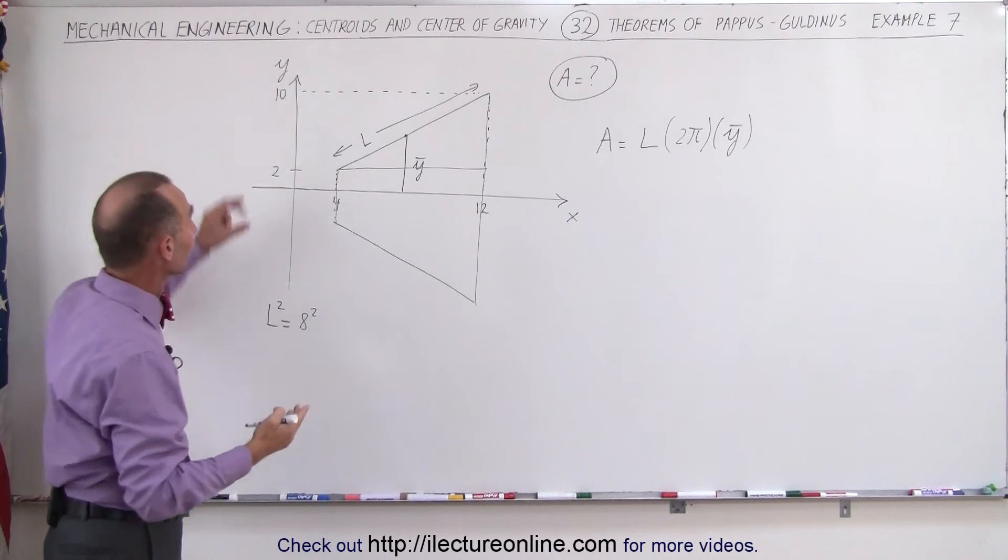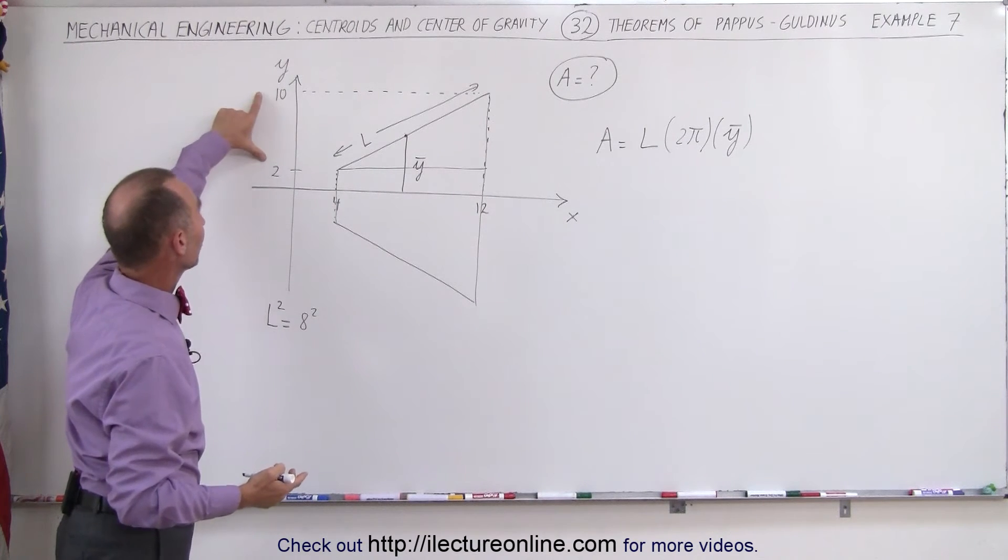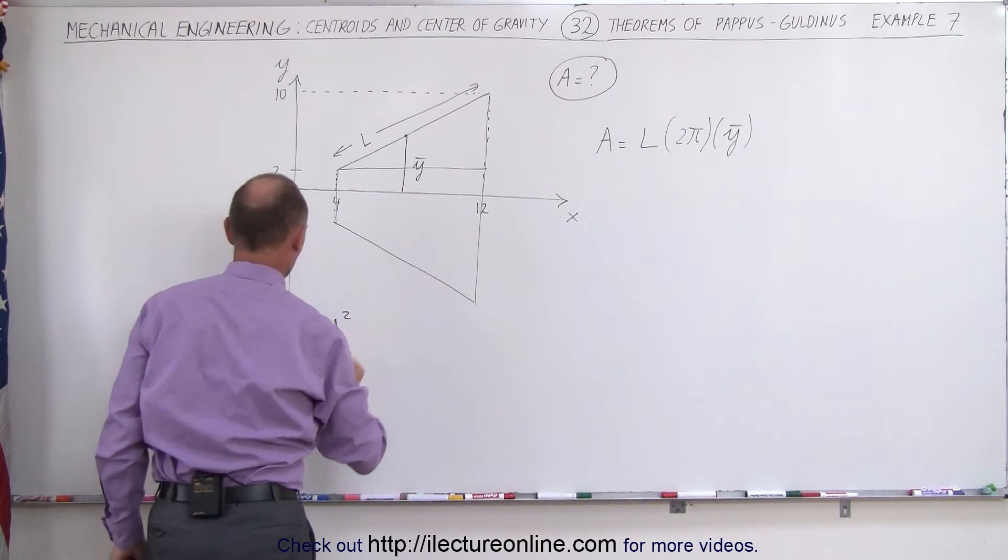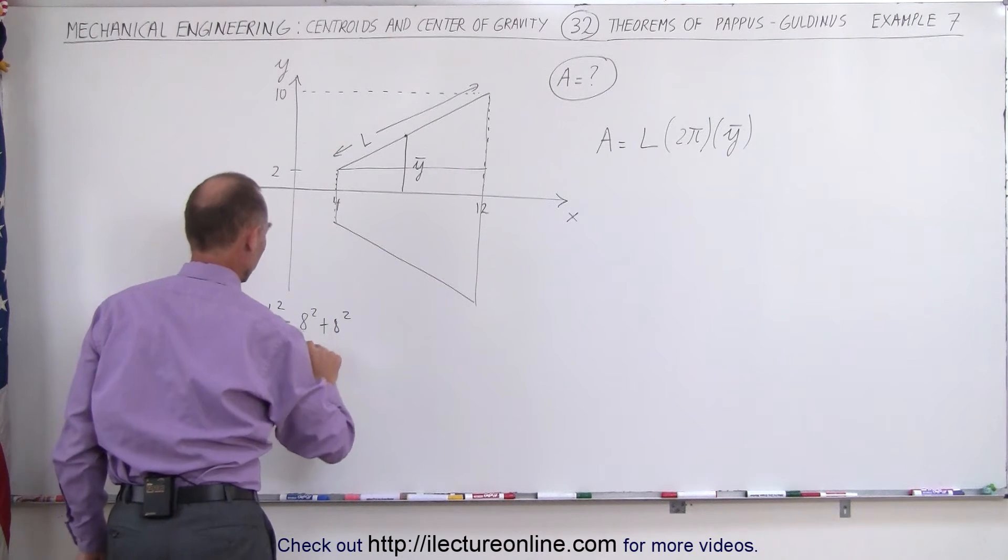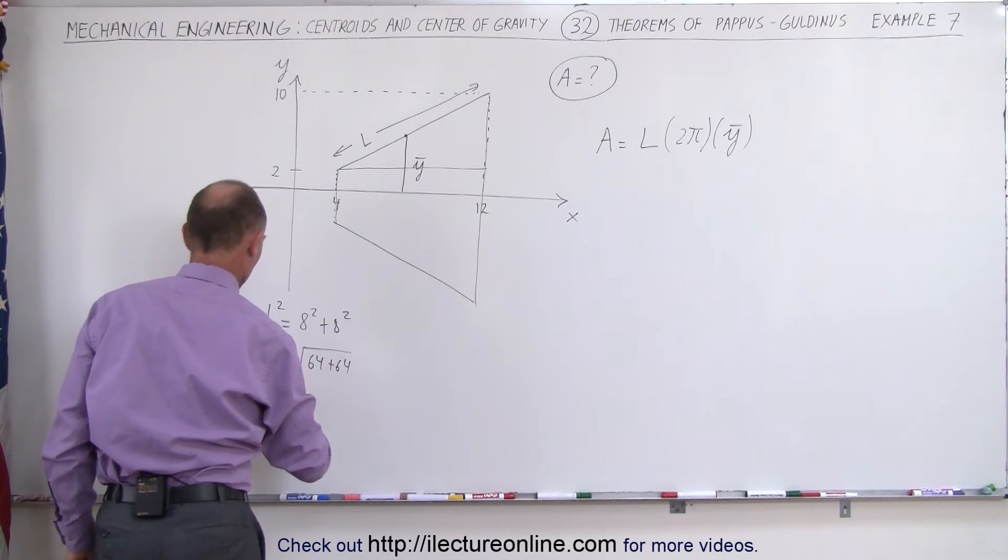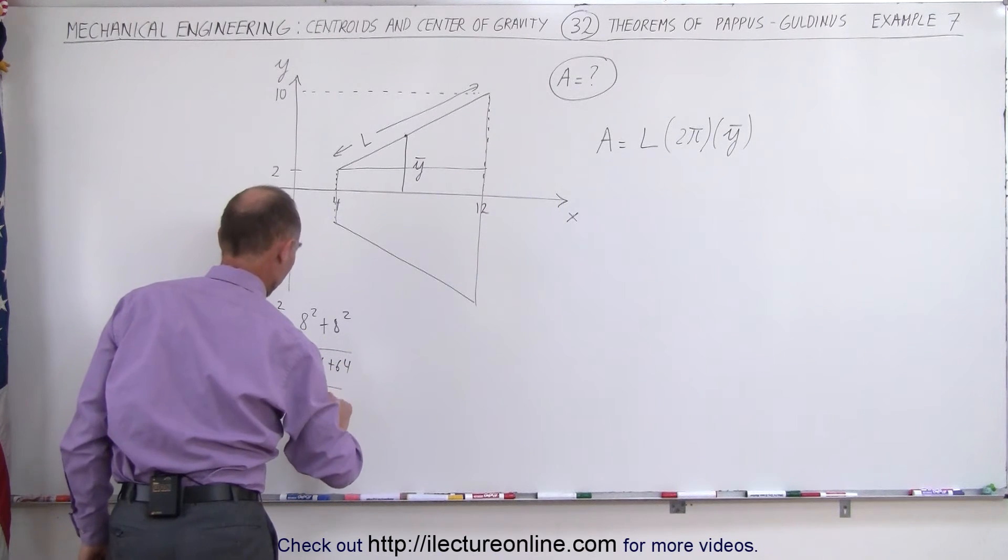It doesn't look like it to this scale but according to the numbers here, this is 8, that's 8. So 8 squared plus 8 squared, or L squared is equal to 64 plus 64, which means L is equal to the square root of 128.